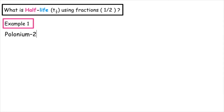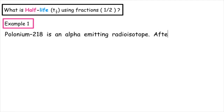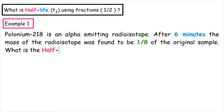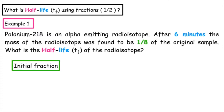Example one: we have polonium-218, which is an alpha-emitting radioisotope. After six minutes, the mass of the radioisotope was found to be an eighth of the original sample. What is the half-life of the radioisotope? We have to start with our original fraction, so for our original we always start with one.